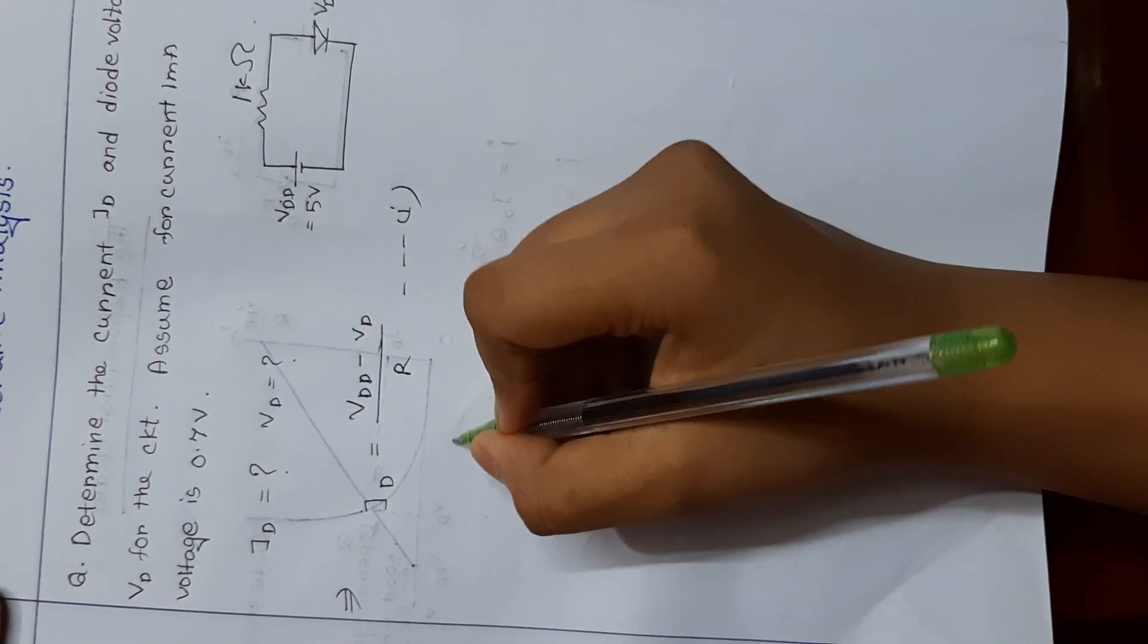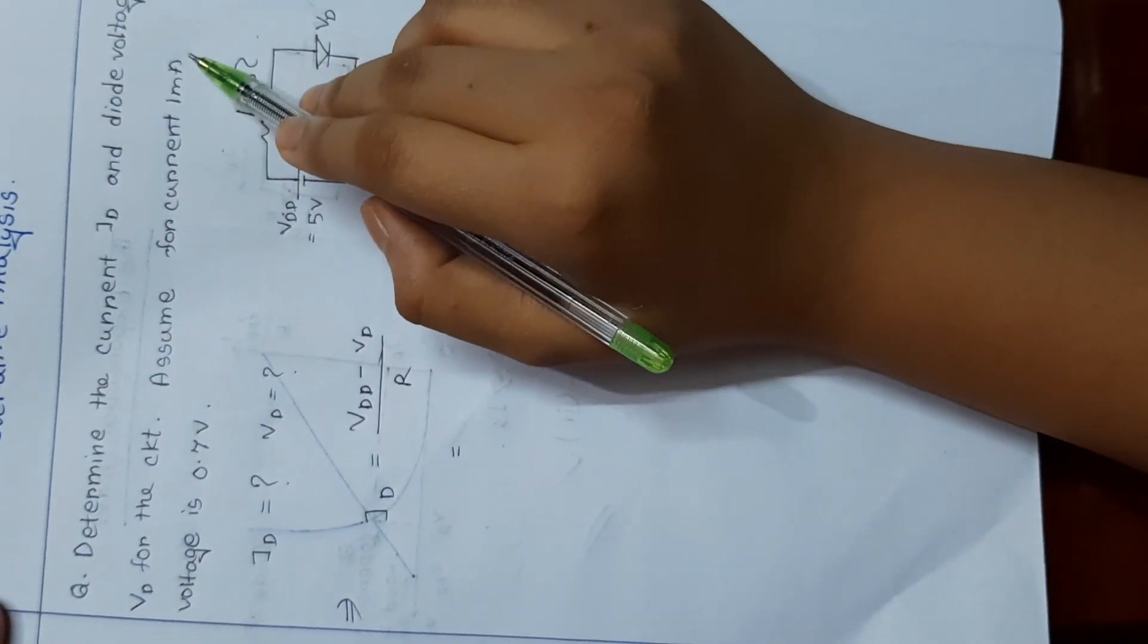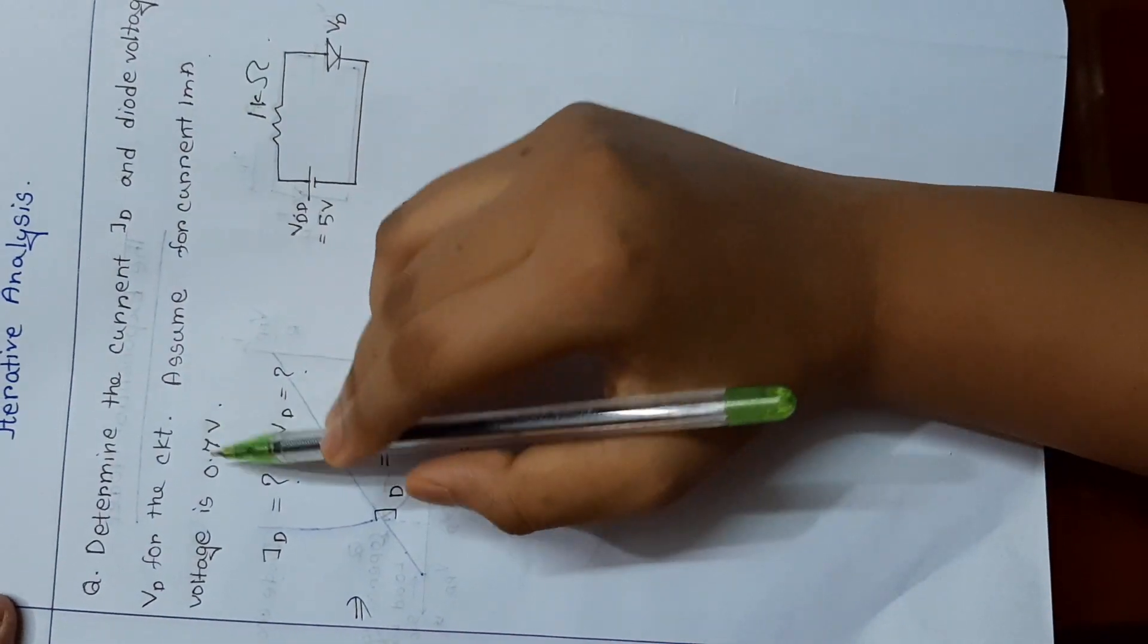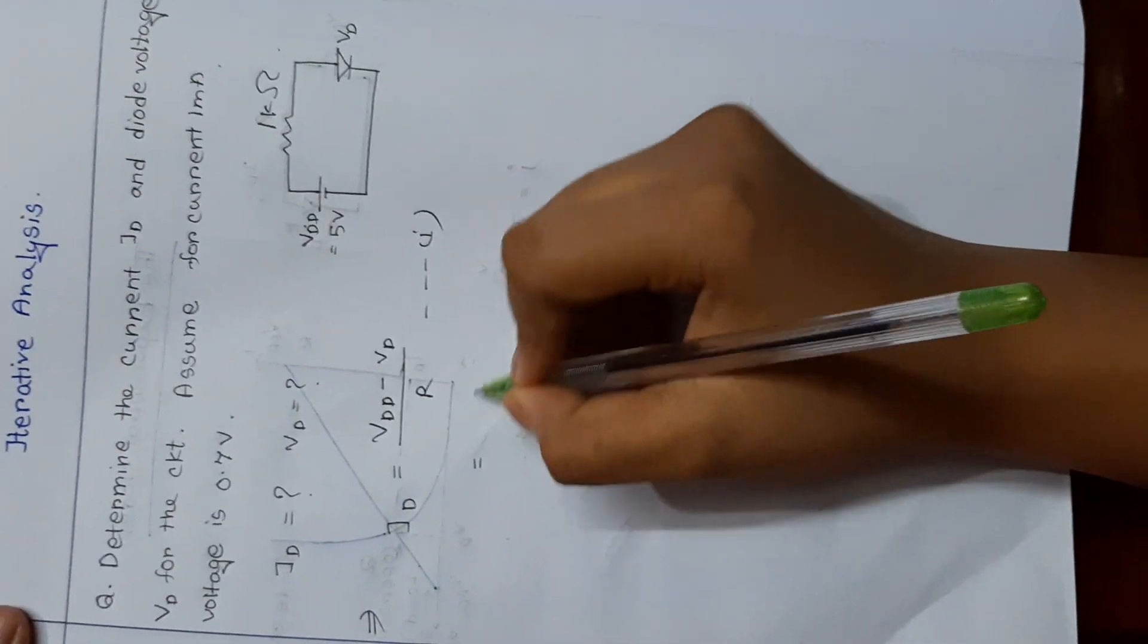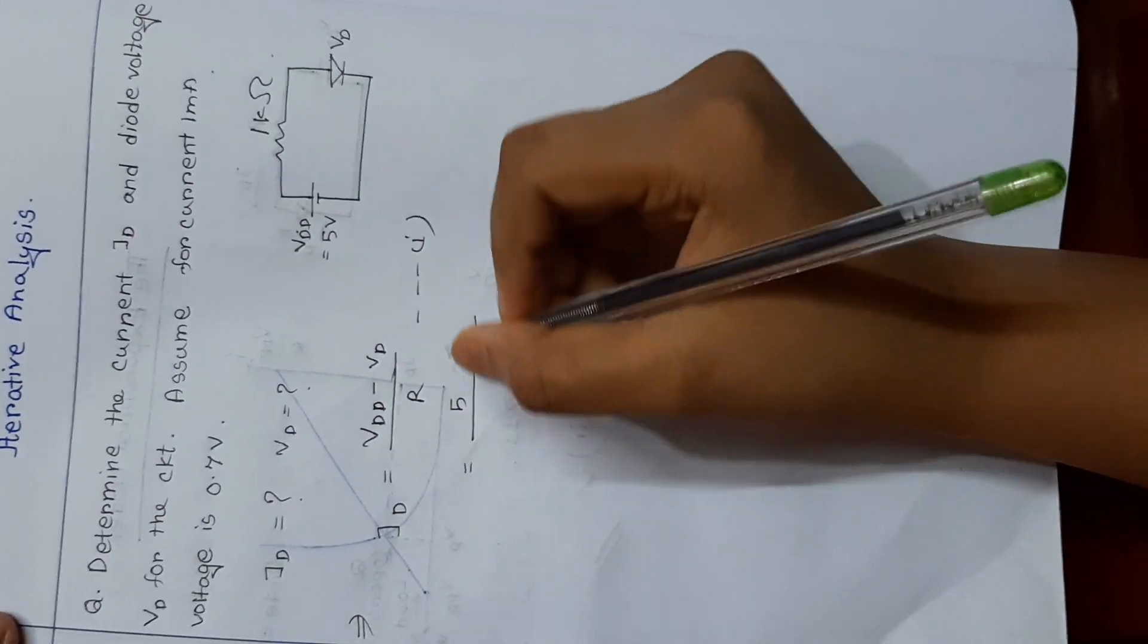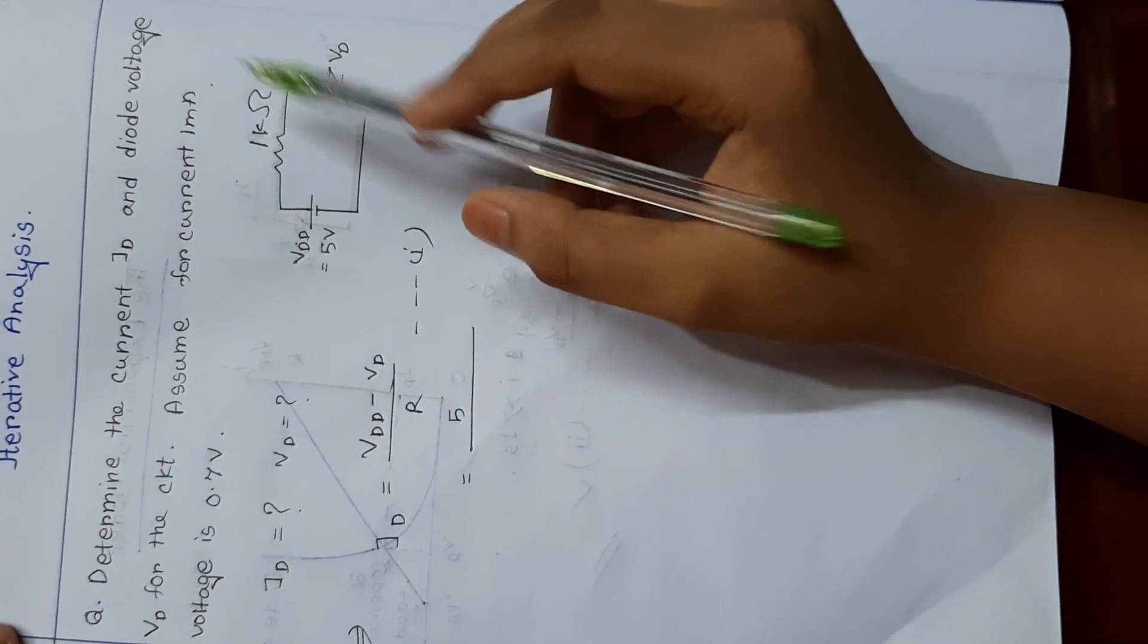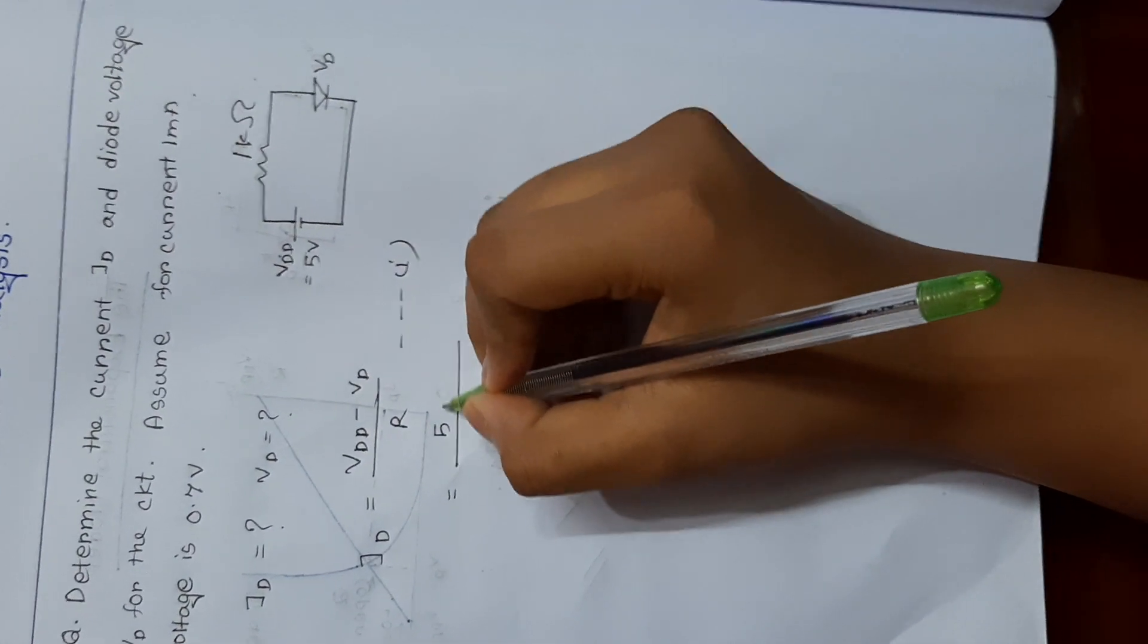So we can say there is given that at 1 milliampere current, the voltage is 0.7 volt. So for here, Vdd is 5 volt, and at 1 milliampere current, the diode voltage is 0.7 volt.